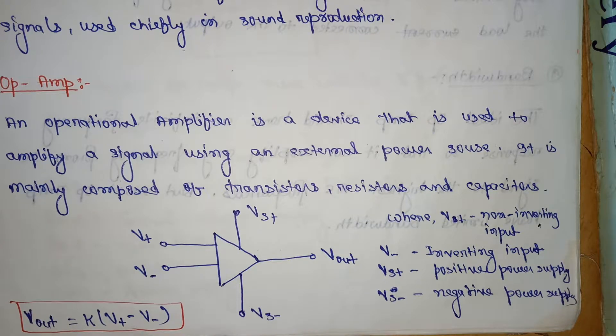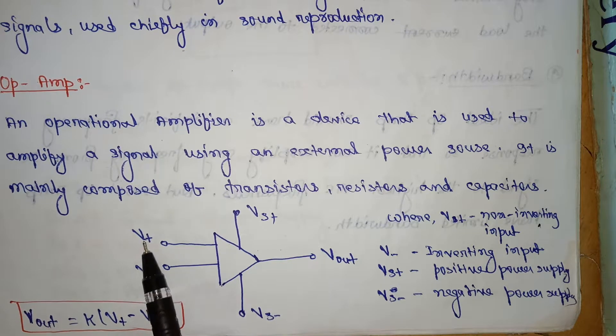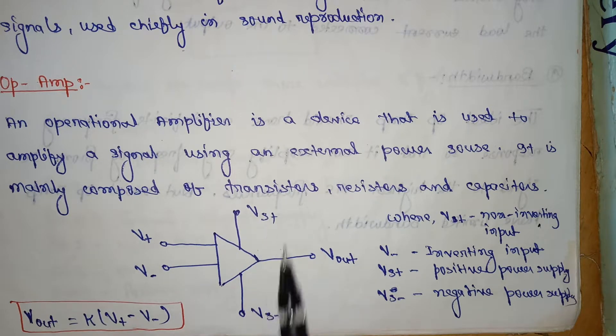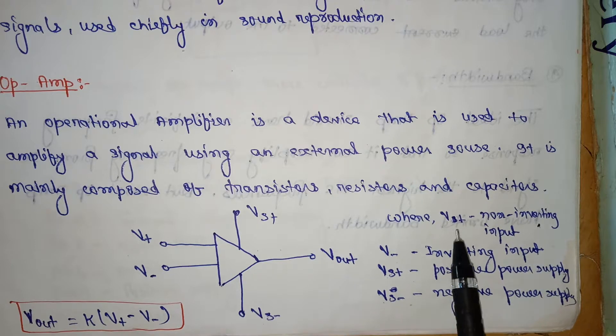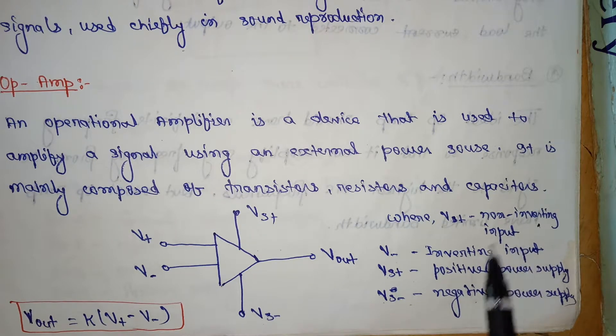An operational amplifier is a device that is used to amplify a signal using an external power source. It is mainly composed of transistors, resistors, and capacitors. This is the op-amp: V plus, V minus, Vs negative voltage. This is output voltage where V minus is positive power supply, V plus is non-inverting input.